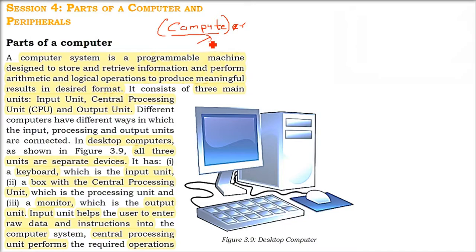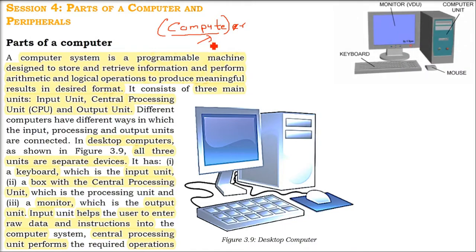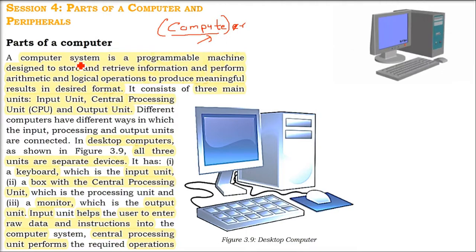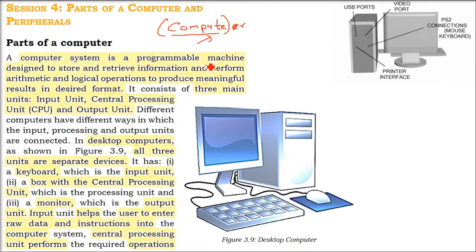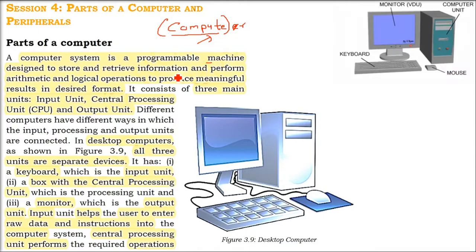So it was a big room when Charles Babbage created, a lot of heat, big room, a lot of electromechanical and these electronic devices. So, computer system is a programmable machine.